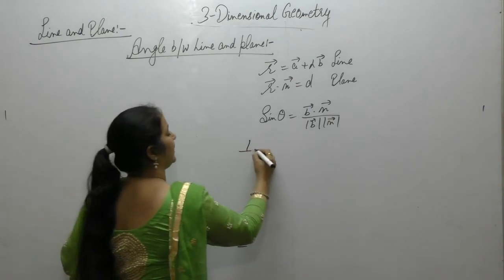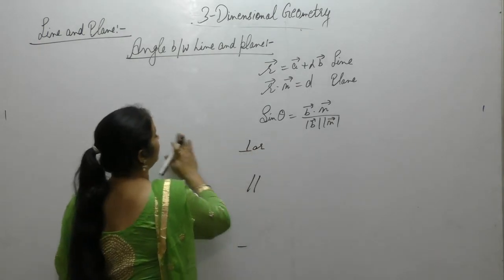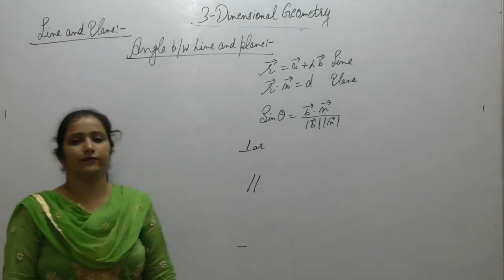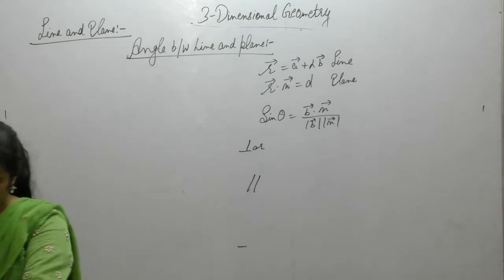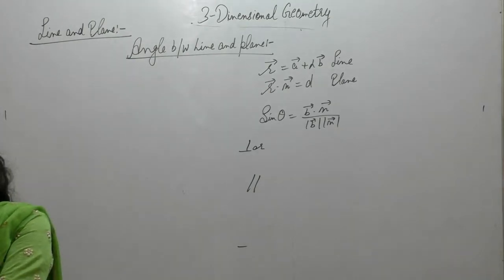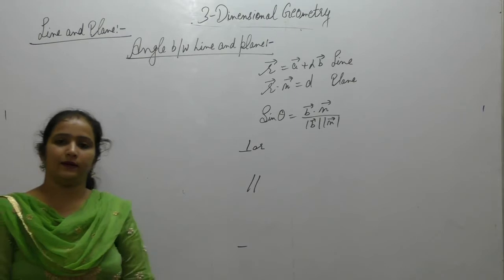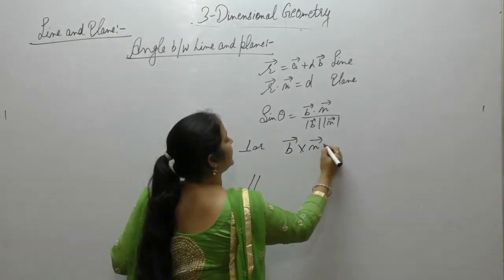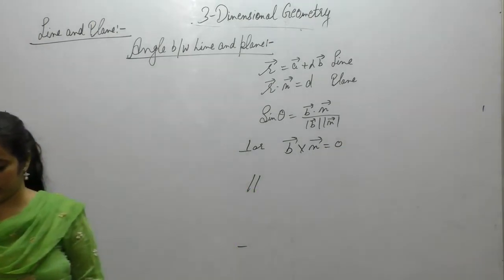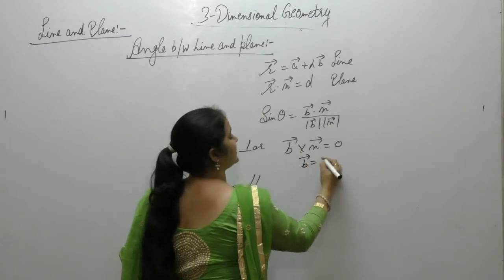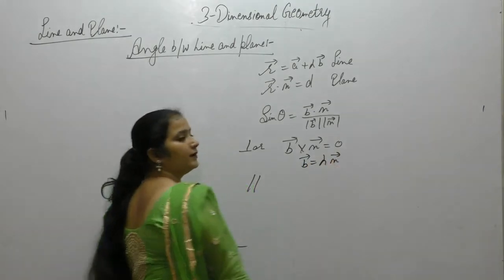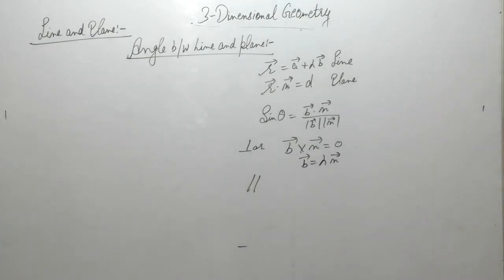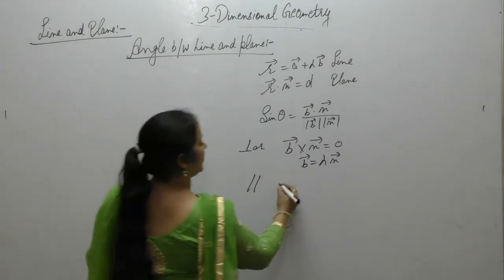Conditions for perpendicular and parallel: when the line is perpendicular to the plane, it is parallel to the normal to the plane. This means b × n = 0, or we can say b vector = λ · n vector. And when the line is parallel to the plane, then it is perpendicular to the normal of the plane.